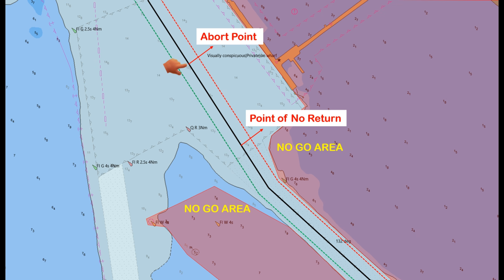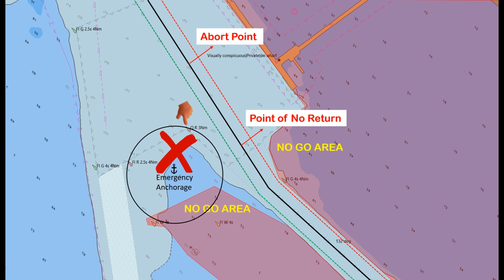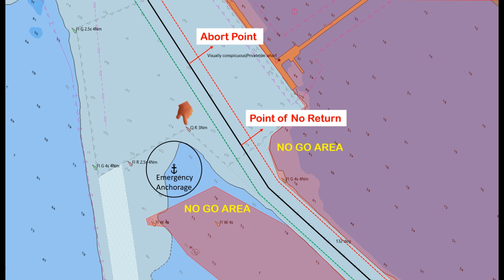Once we have marked the point of no return and abort point, if we can find a nearby area where we can drop anchor in case the ship encounters emergencies, that will be better. Looking at this area, we can use it as our emergency anchorage — we can drop anchor here even if it is not a designated anchorage area, as long as we are in an emergency situation. But first, we must calculate the swing radius of our ship. I have a video on how to calculate the swing radius — kindly check the link in the description.